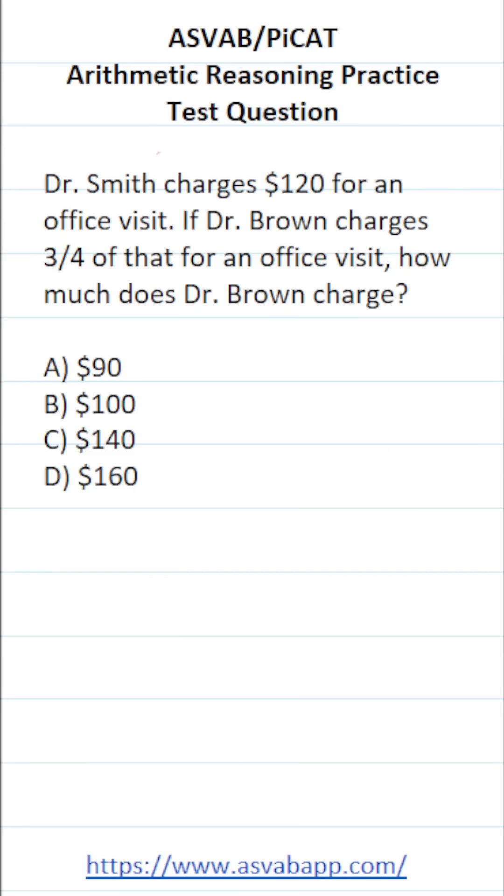This arithmetic reasoning practice test question for the ASVAB and PiCAT says, Dr. Smith charges $120 for an office visit. If Dr. Brown charges three-fourths of that for an office visit, how much does Dr. Brown charge?